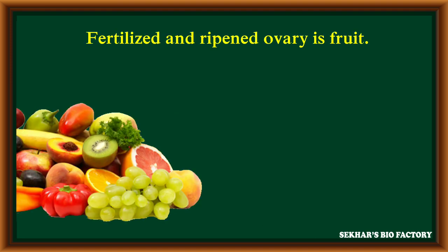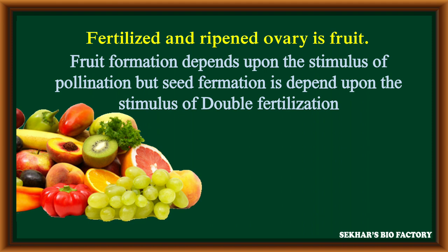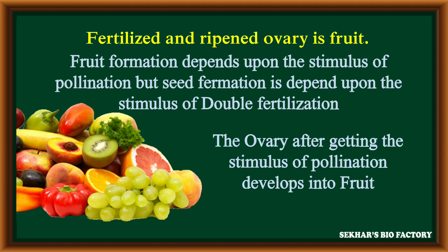Fruit — it is generally considered as a fertilized and ripened ovary. Seed formation completely depends on the stimulus of double fertilization. During sexual reproduction, after completion of fertilization, the ovary will become a fruit by the stimulus of pollination.